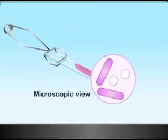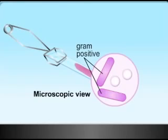When viewed under the microscope, gram-positive cells appear purple, and gram-negative cells are colorless.